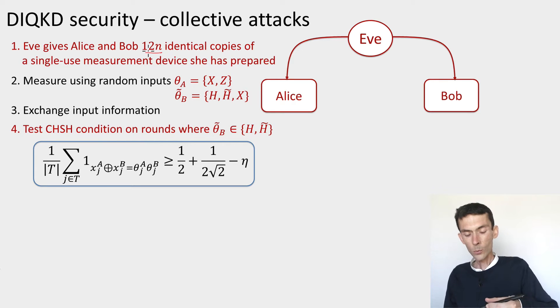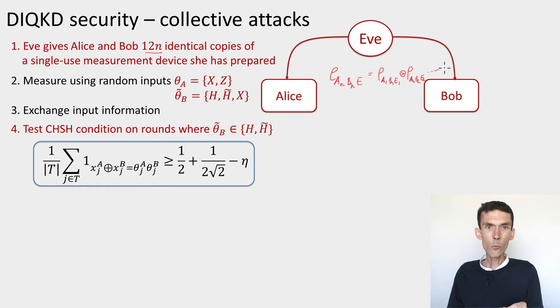The system between Alice and Bob, in particular the entangled state that's hidden in these devices, must take the form, instead of being an arbitrary state A12N, BN, E, then this should take the form A1, B1, E1, tensor, A2, B2, E2, etc. We also assume that each of these states is the same, and the devices behave the same every time they're used.